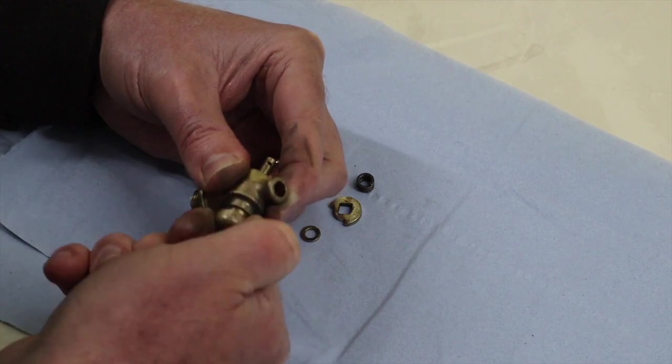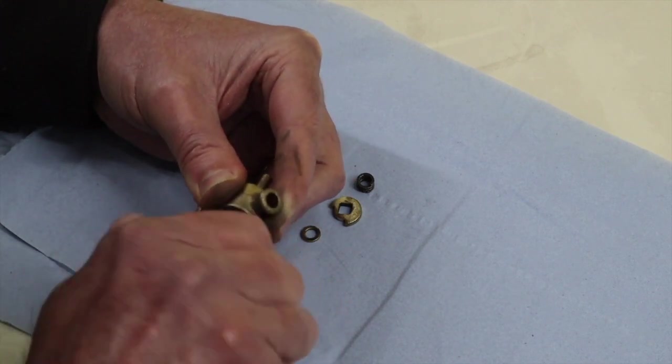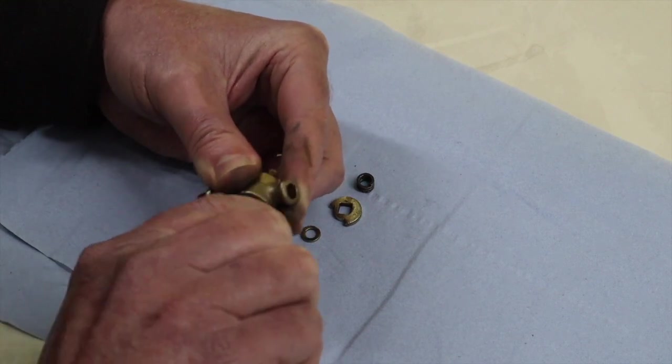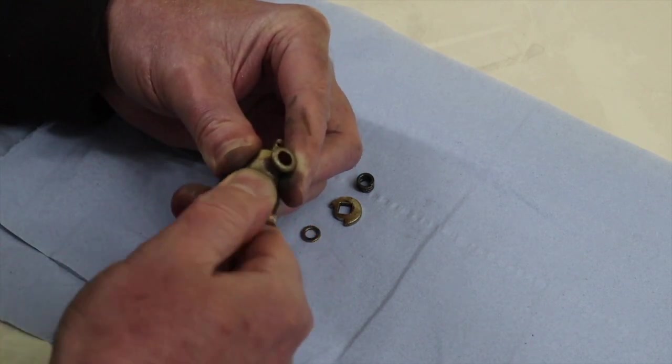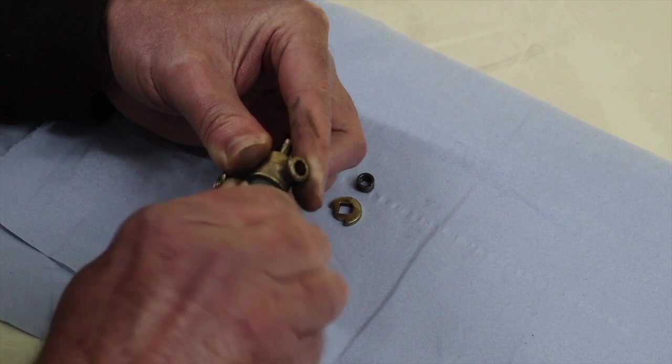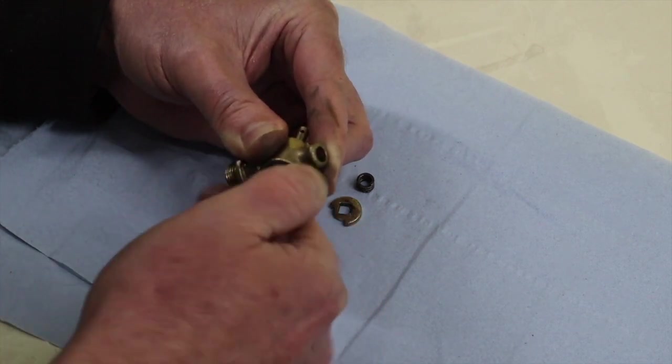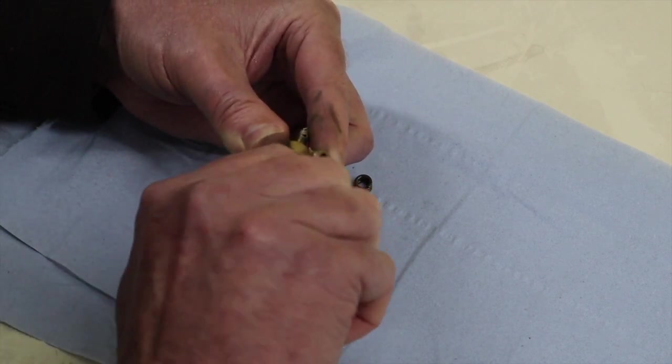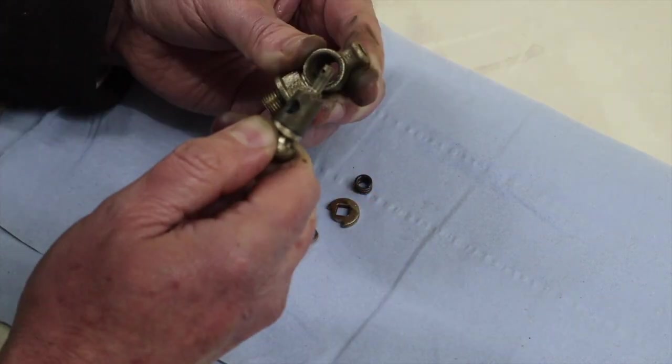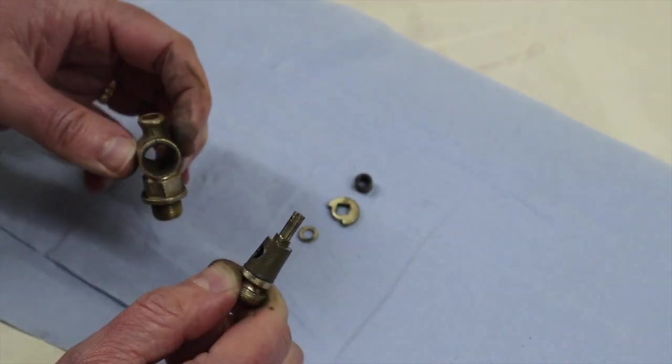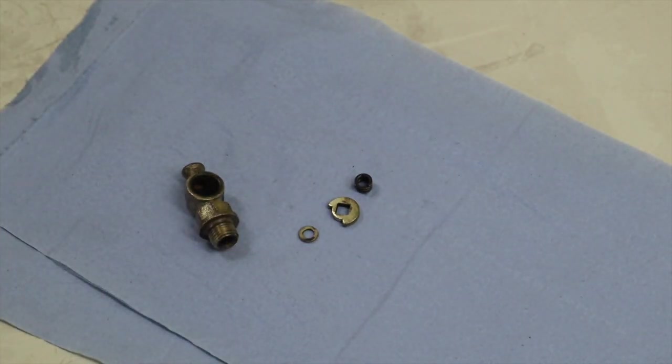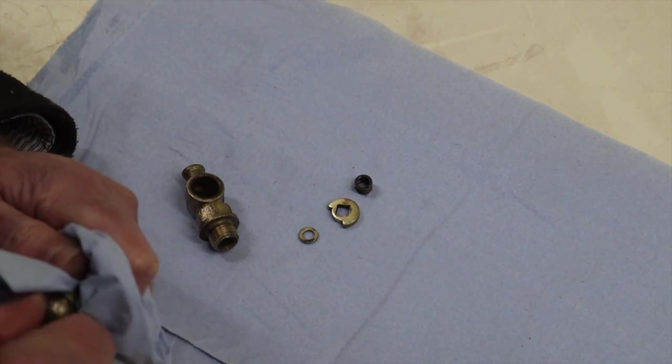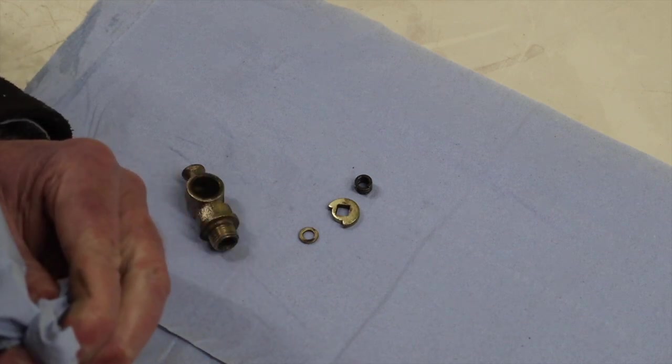And we're basically just turning it. And what that will do is basically grind the two surfaces equally until such time as they match, essentially. Now, we can see there's probably a fair amount of dirt coming off. You can see that looks quite dirty. So, we'll just give that a wipe and see what the surface is looking like.